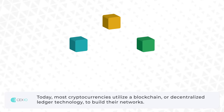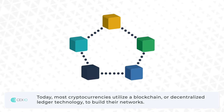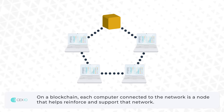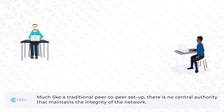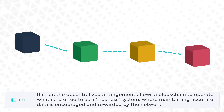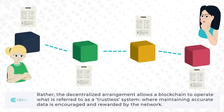Today, most cryptocurrencies utilize a blockchain or decentralized ledger technology to build their networks. On a blockchain, each computer connected to the network is a node that helps reinforce and support that network. Much like a traditional peer-to-peer setup, there is no central authority that maintains the integrity of the network. Rather, the decentralized arrangement allows a blockchain to operate what is referred to as a trustless system, where maintaining accurate data is encouraged and rewarded by the network.